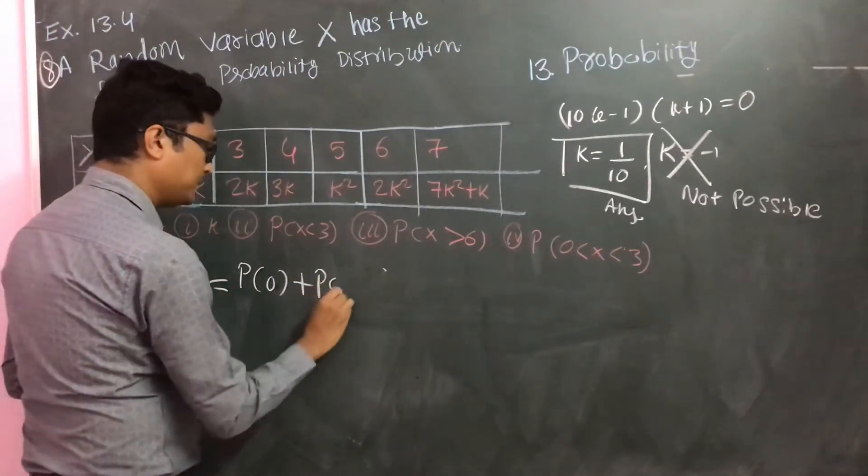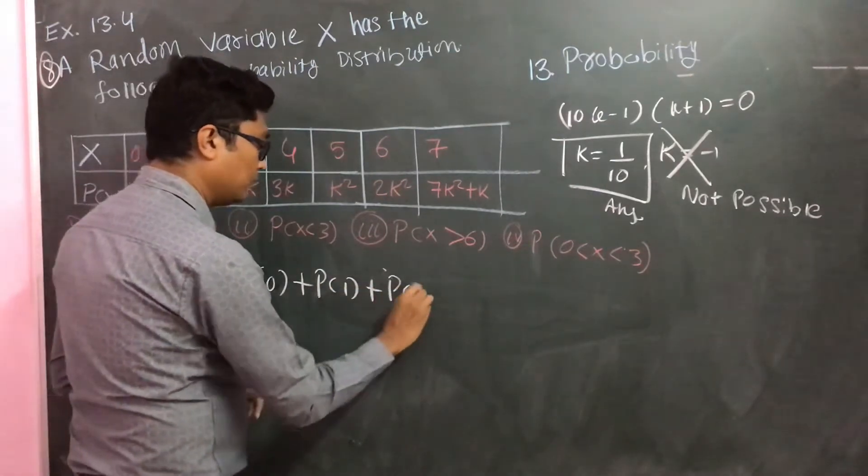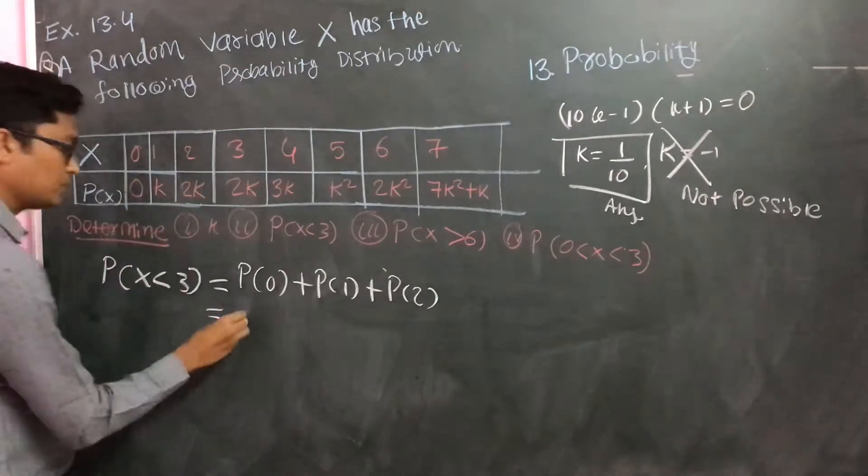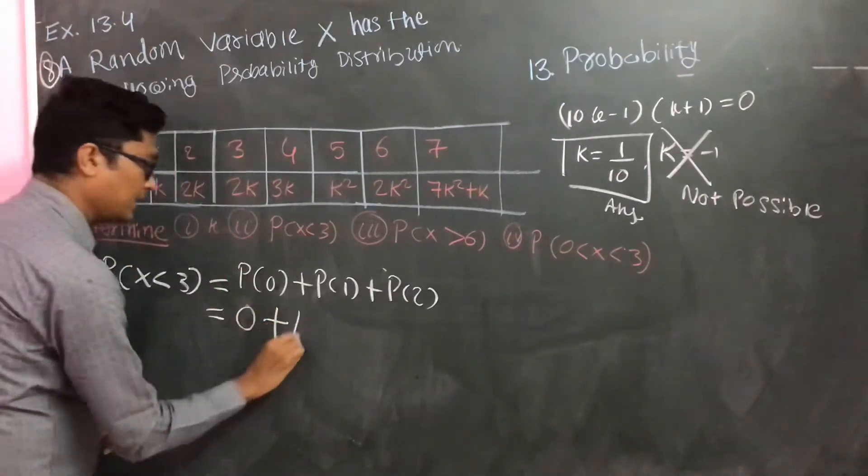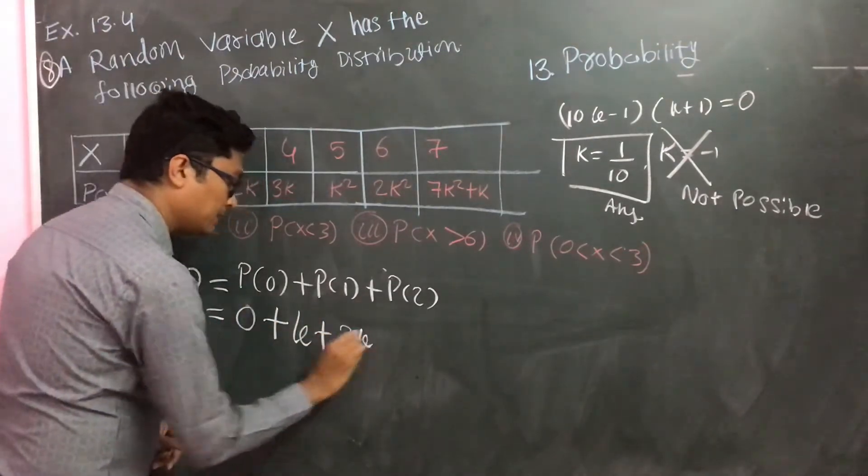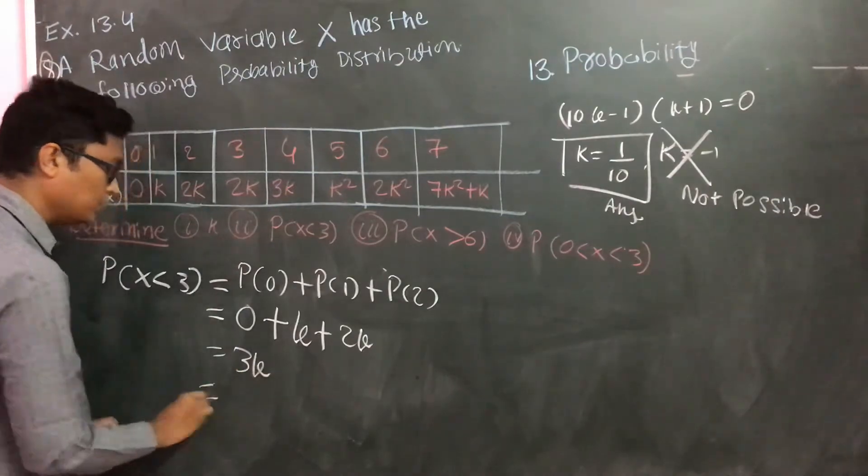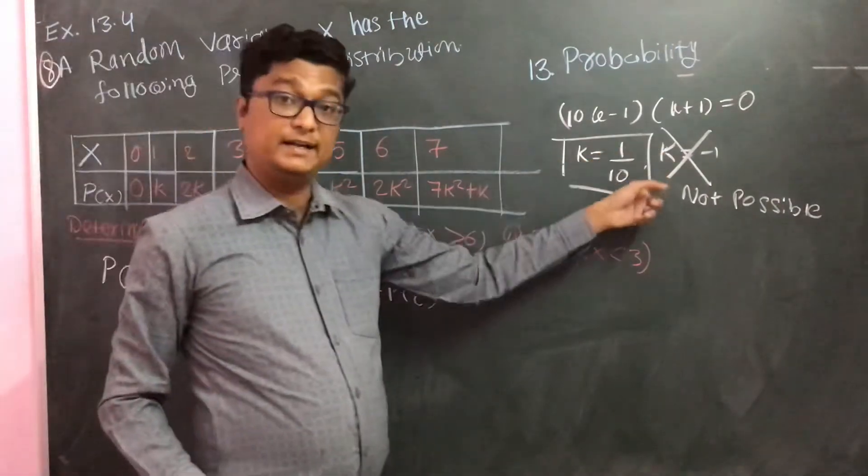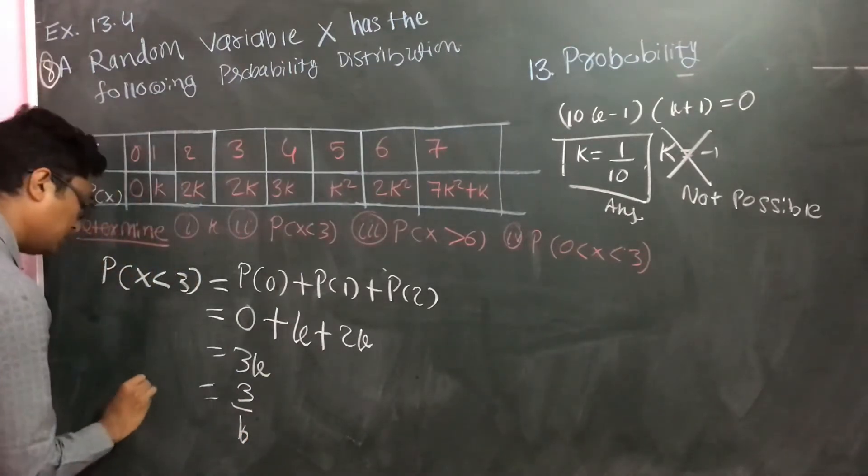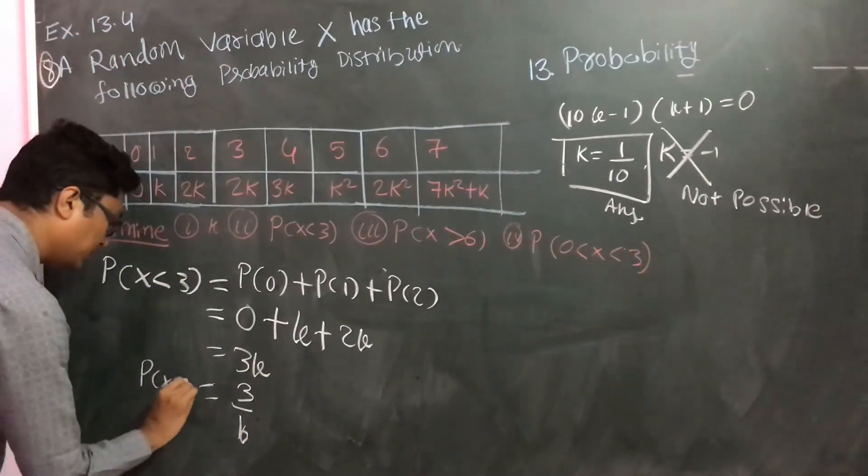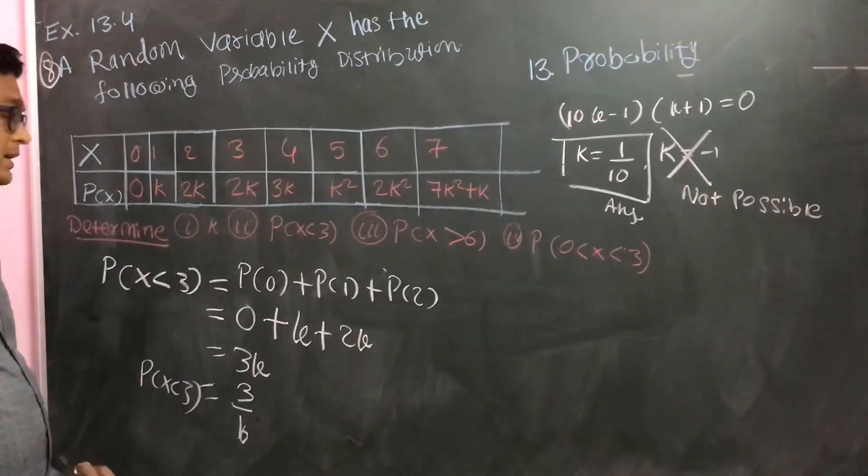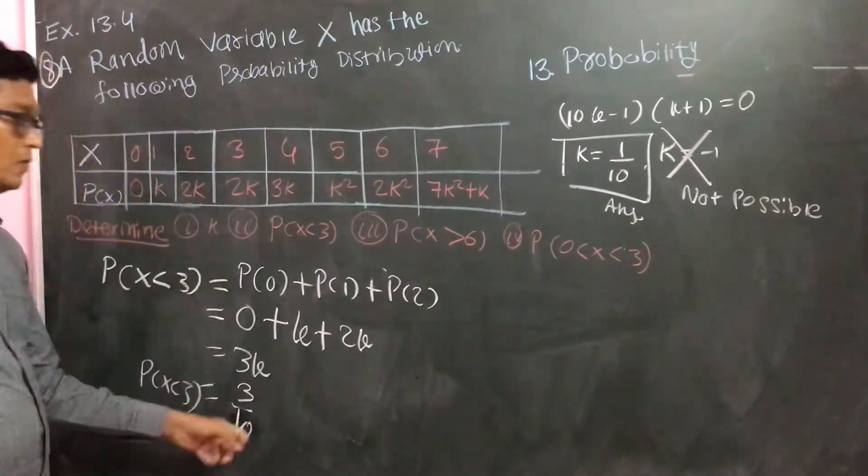P of 0 plus P of 1 plus P of 2. This is 0, P of 1 is k, it is k, and P of 2 is 2k. And it is 3k. As we know k is 1 by 10, it is 3 by 10. So this is our second sub-question answer: P of X less than 3 is 3 by 10.